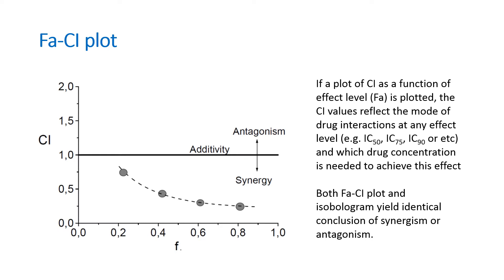If a plot of CI as a function of effect level FA is plotted, the CI values will reflect the mode of drug interactions at any effect level and at which drug concentration is needed to achieve this effect. Both the FA-CI plot and isobologram yield identical conclusions of synergism or antagonism. The FA-CI plot is effect-oriented, whereas the isobologram is dose-oriented. Both graphics can be considered two sides of the same coin. However, the FA-CI plot is visually more convenient to use than the isobologram, since data point overcrowding at various effect levels can be avoided.